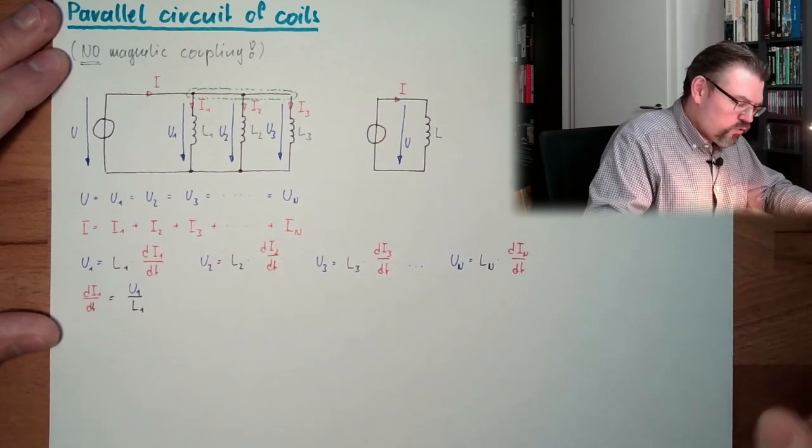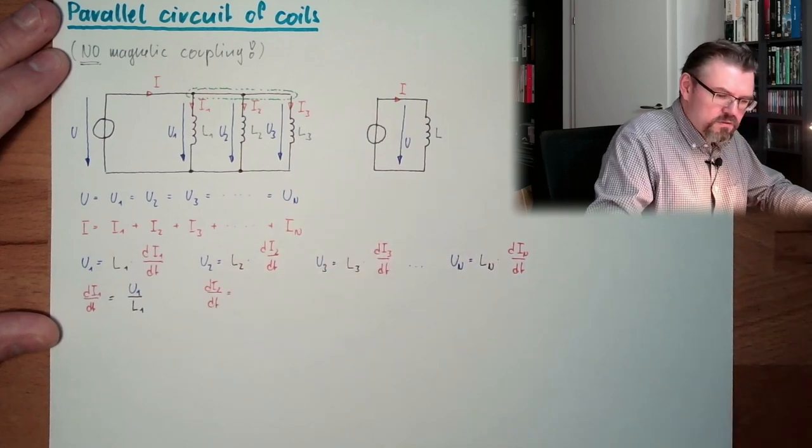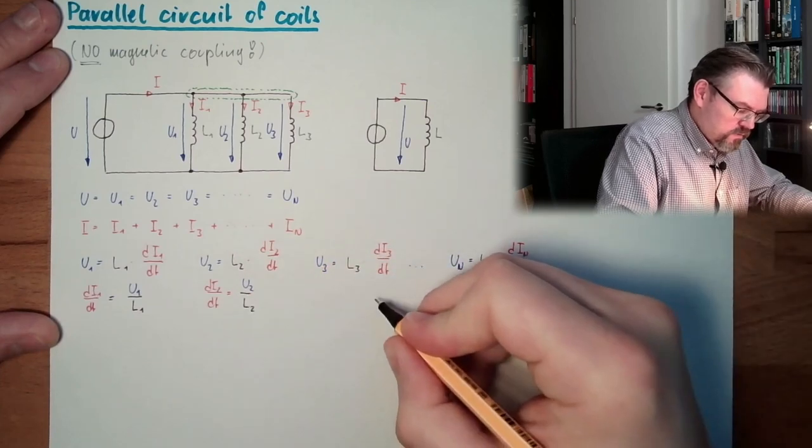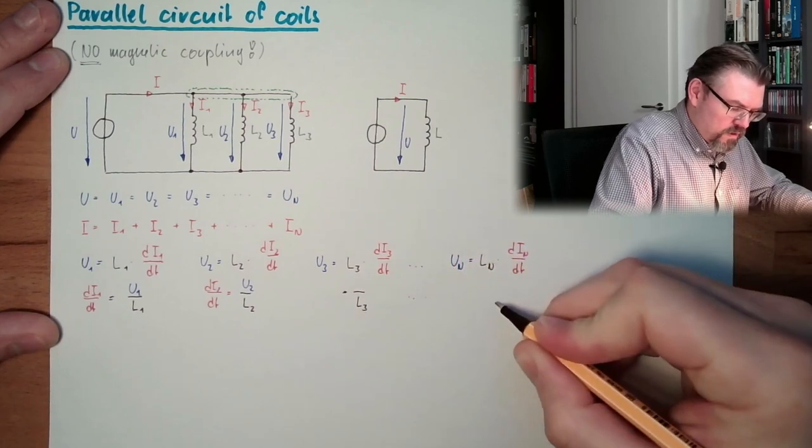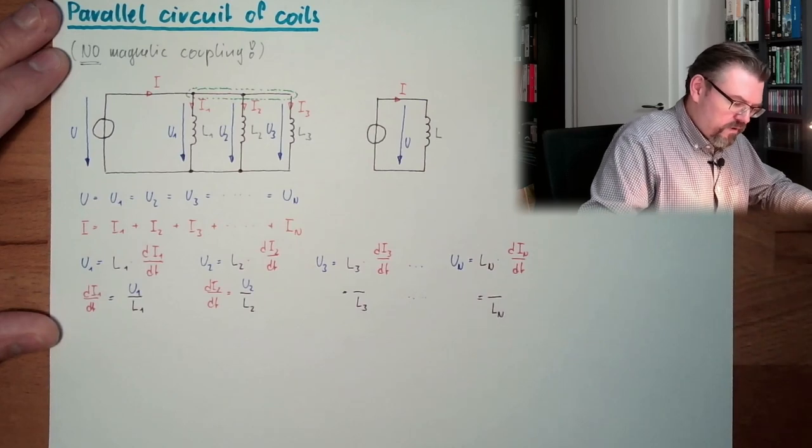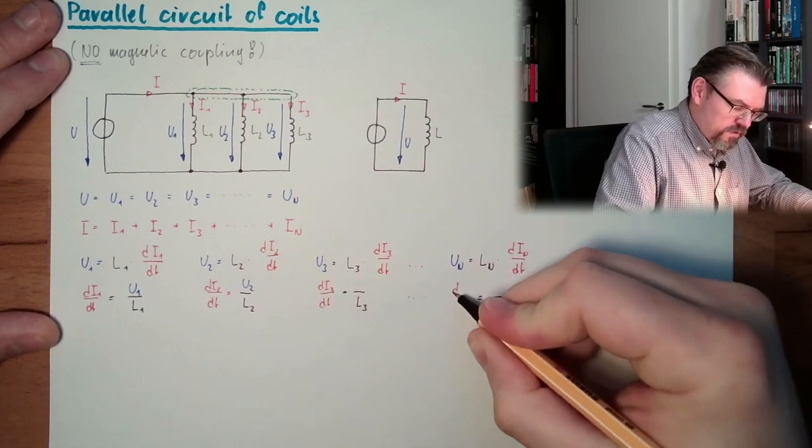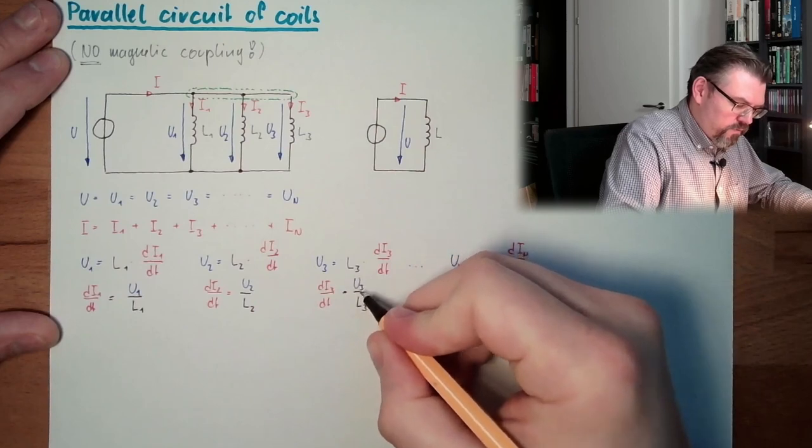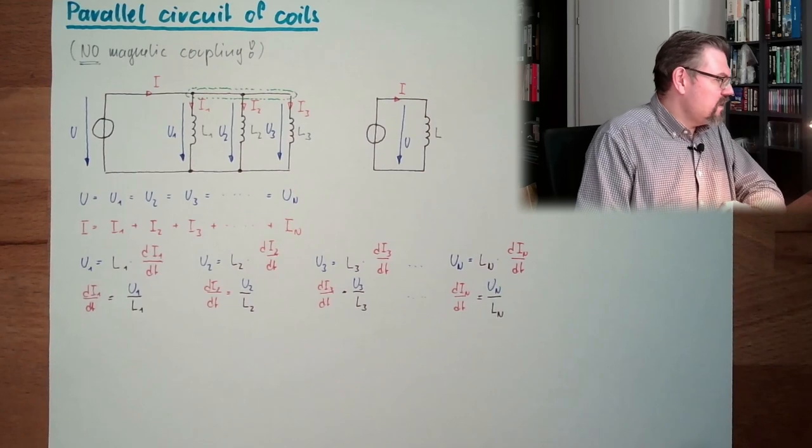And so on. The change rate of this equals U2 divided by L2, here L3, and here Ln. Here we have the change rate of I3, here we have the change rate of In. And here we have U3 and Un. Just bring the stuff to the other side.